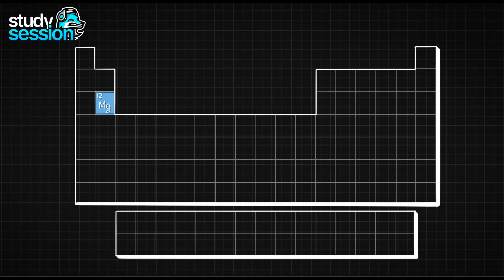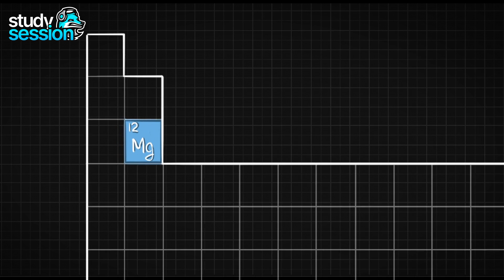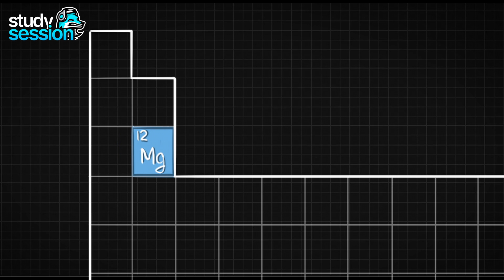To solve this, the first thing we need to do is look at our periodic table, and we need to see how many electrons a magnesium atom actually has in its ground or unexcited state.